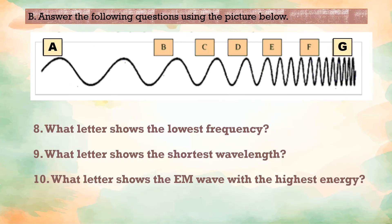For the second part of our assessment, Letter B, answer the following questions using the picture below. Number A, what letter shows the lowest frequency? Kindly choose from A to G. Correct! Letter A.